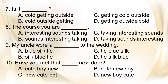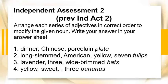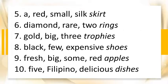Independent Assessment 2: Arrange each series of adjectives in correct order to modify the given noun. Write your answer in your answer sheet. 1. dinner, Chinese, porcelain — plate. 2. long-stemmed, American, yellow, 7 — tulips. 3. lavender, wide-brimmed — hats. 4. yellow, sweet, 3 — bananas. 5. red, silk — skirt. 6. diamond, rare, 2 — rings. 7. gold, big, 3 — trophies. 8. black, few, expensive — shoes. 9. fresh, big, some, red — apples. 10. 5, Filipino, delicious — dishes.